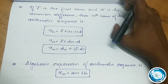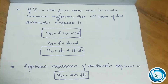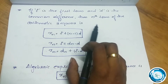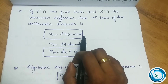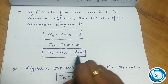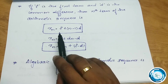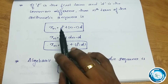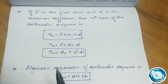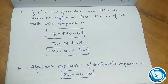If f is the first term and d is the common difference, then the nth term of the arithmetic sequence is xn equals f plus (n minus 1) into d. The fifth term, for example, is x5 equals f plus 4 into d. We can also express this as the algebraic expression xn equals an plus b.